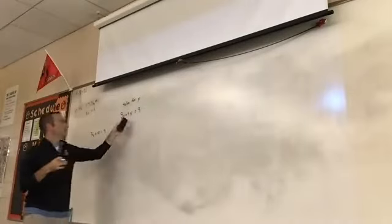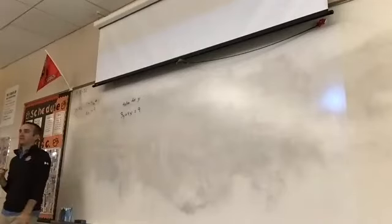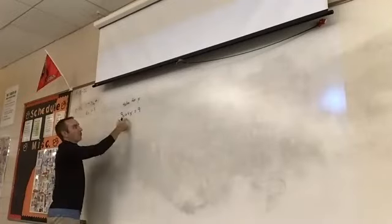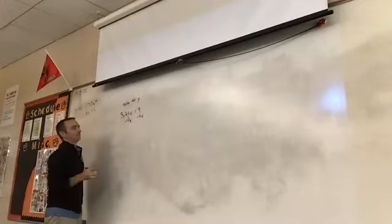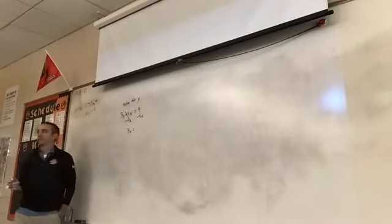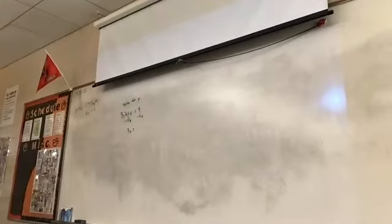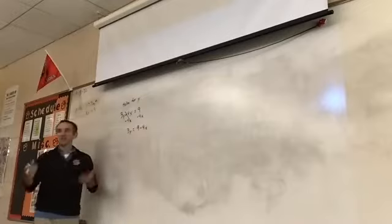Raise your hand and tell me what we're going to do as our first step to get y by itself. That's exactly right — four x does not have a y in it, so we have to get rid of it. We're going to subtract 4x on both sides. That leaves us with 3y on the left.